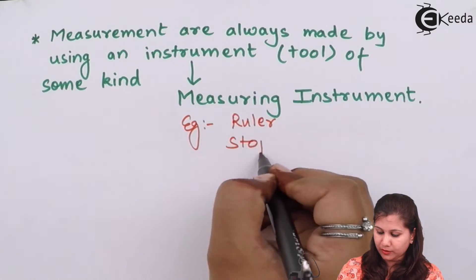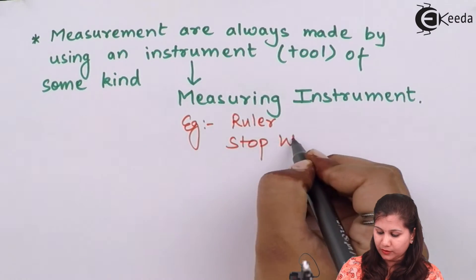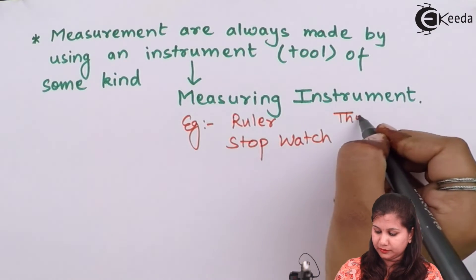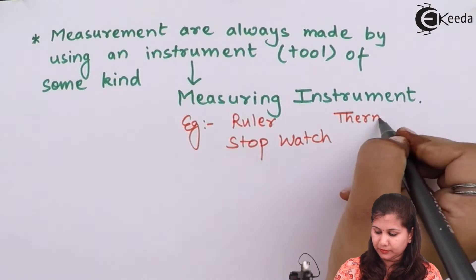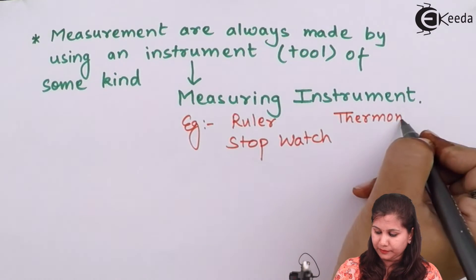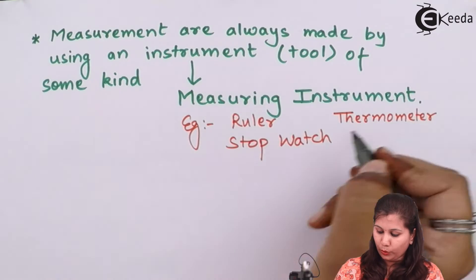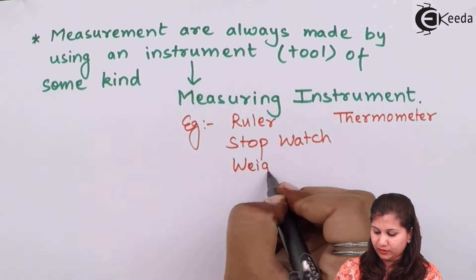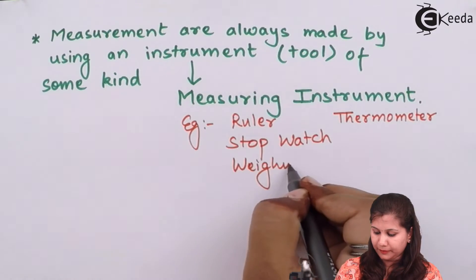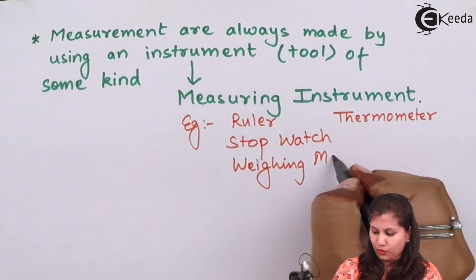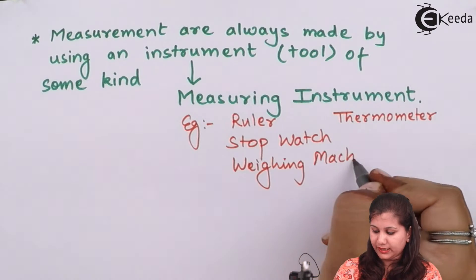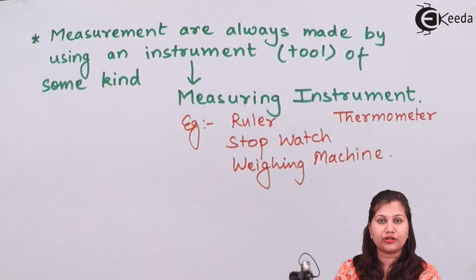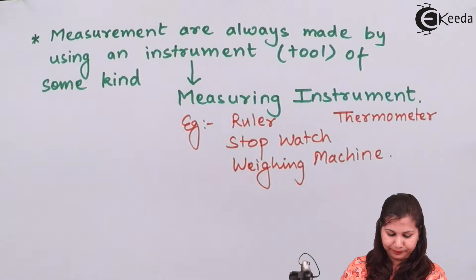Ruler, stopwatch, thermometer, and weighing machine — all these are types of measuring instruments.